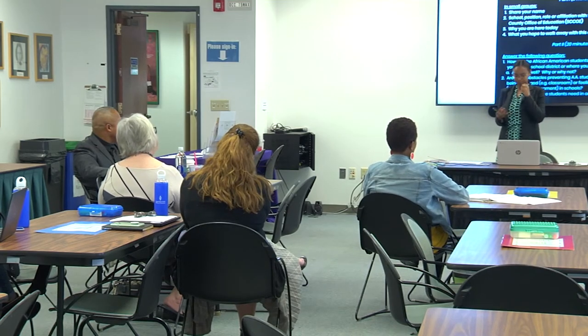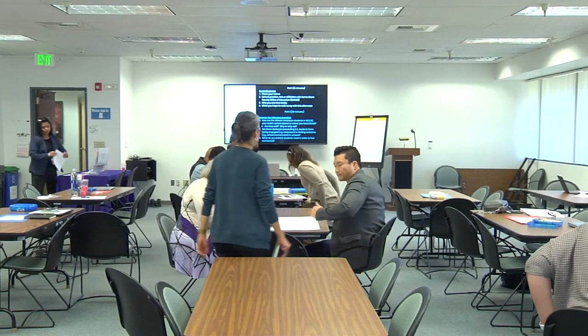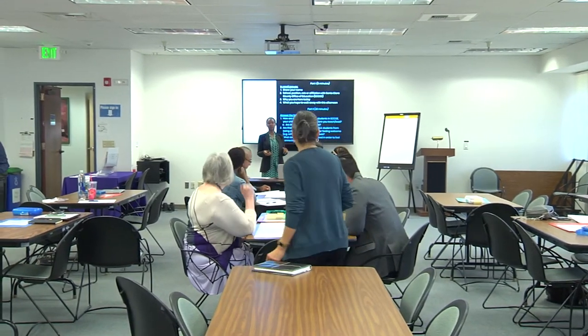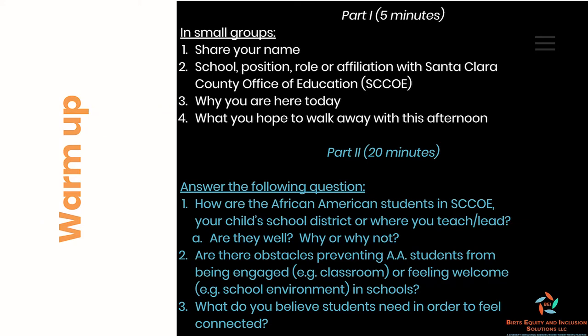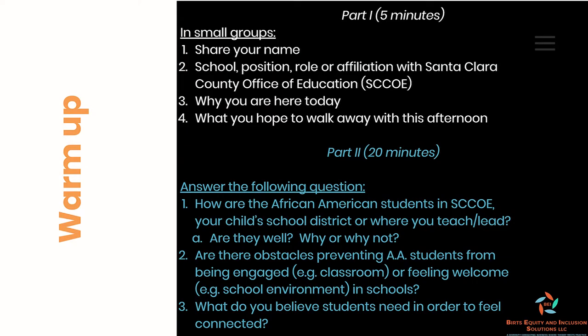I want to do a deep dive into unpacking the question 'How are the children?' Here are the questions I want you to address in your small groups. First: How are the African American students in your context — your school, Santa Clara County — are they well, why or why not? Second: Are there obstacles preventing African American students from being engaged in the classroom or feeling welcome in the school environment? Third: What do you believe students need in order to feel connected? Number your responses one, two, three and jot down your ideas.